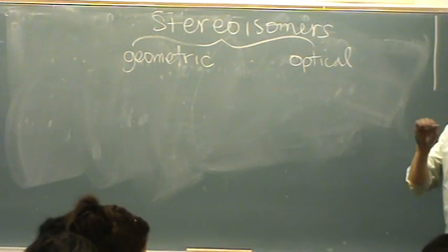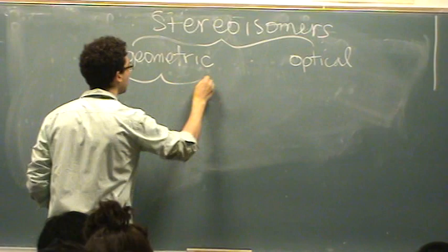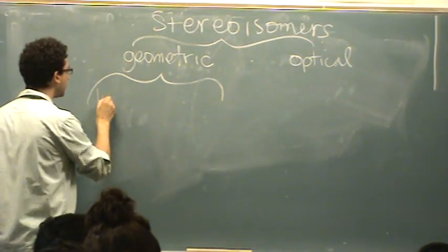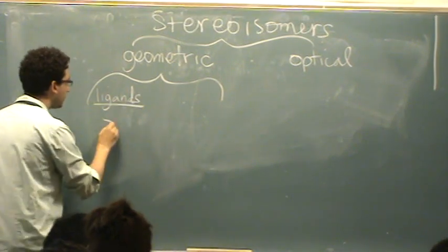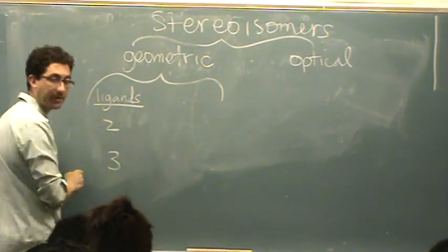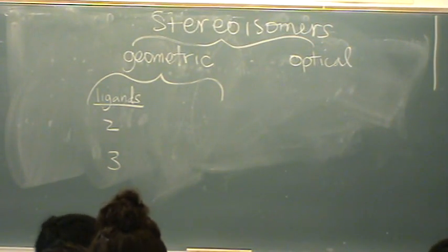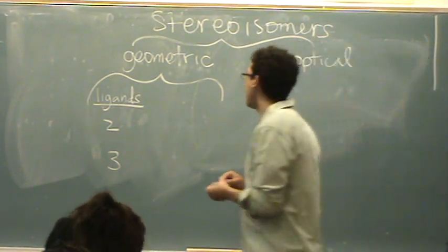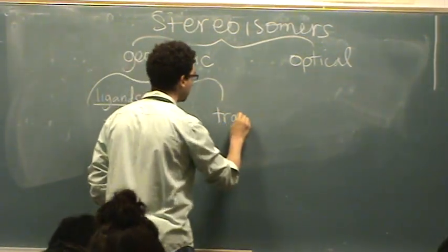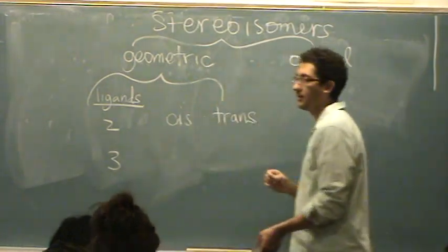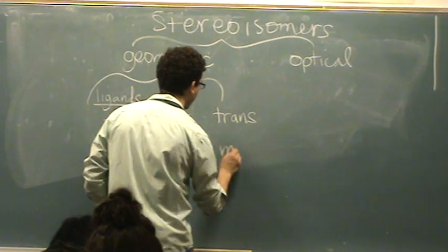Geometric has some categories in it. It depends, if I say ligands here, there's the two category and the three category. If you have two ligands that are the same, we're talking about cis or trans. Versus if you have three ligands the same, you name that fac or mer.